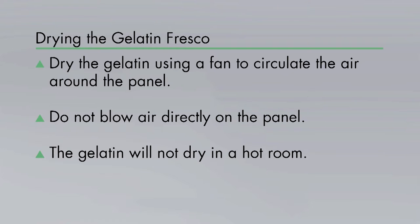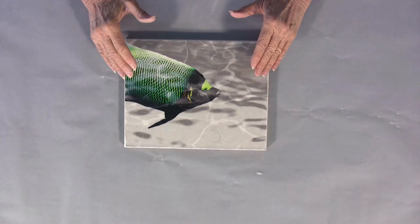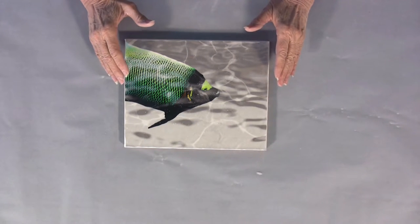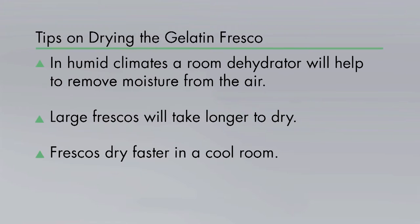If you direct a fan right to this surface what's going to happen is it will dry unevenly and too fast and if the top dries first then it's going to crack. So you just want to move air through the room while this is drying. So a floor fan from the other side of the room or an oscillating fan that tips upwards that will do the trick.